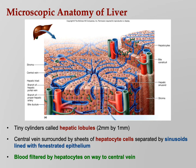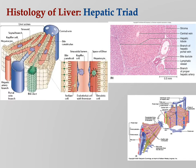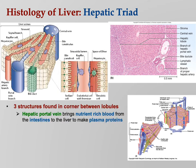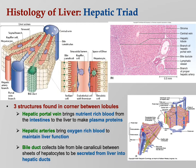Here's a nice close-up of the hepatic triad right there in the corner: the hepatic portal vein brings in the nutrient-rich blood, the hepatic artery keeps the liver alive, and the bile duct transports the bile made by the hepatocytes.